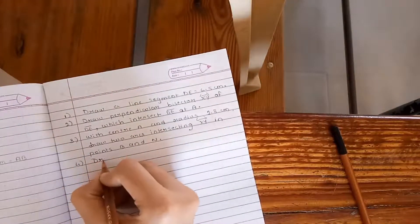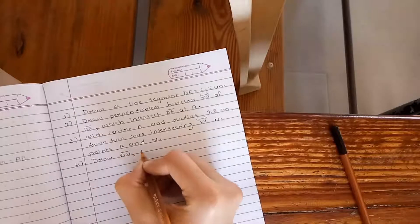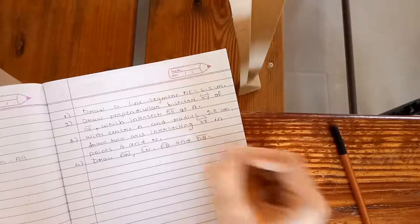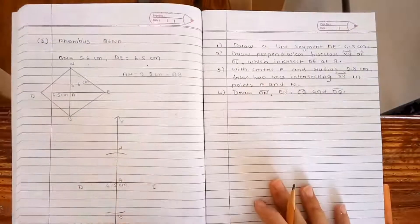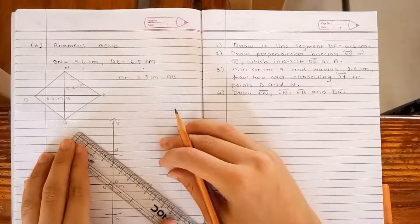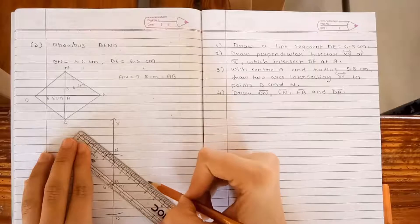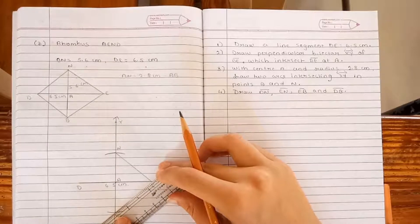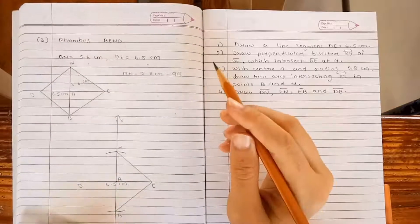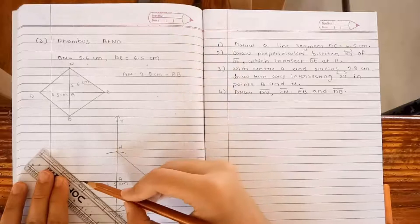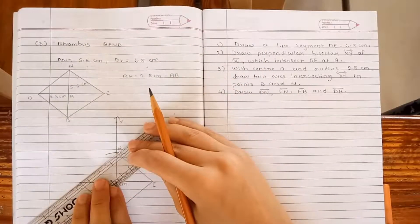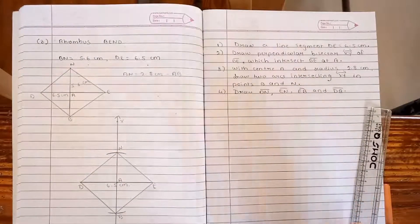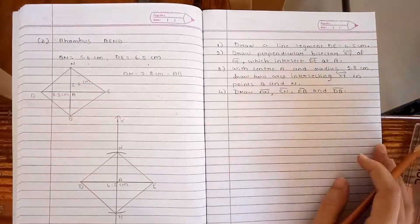Next step, draw DN, EN, EB and DB. Now we will join this, EN. D, EN, D is the required quadrilateral. So, D, EN, D is the required quadrilateral.